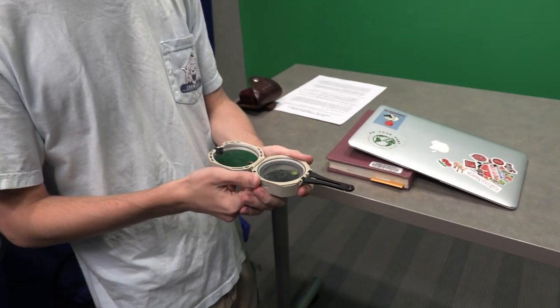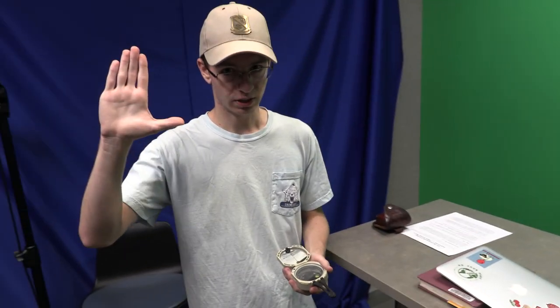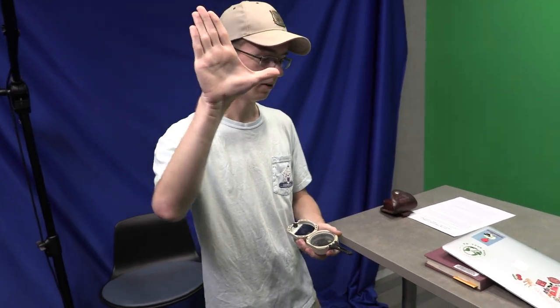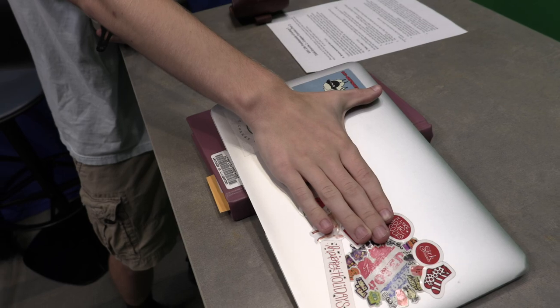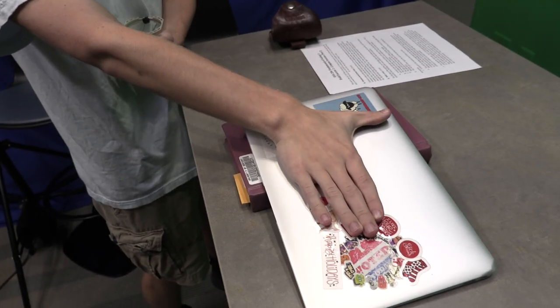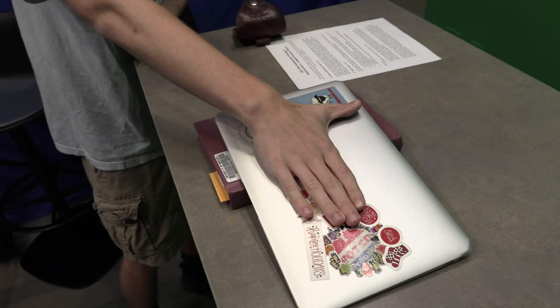So I'm going to demonstrate the right hand rule now. You just take your right hand, hold it like this, make the L, place it on the surface that you want to find the strike and dip of and the direction your thumb is facing is the direction this surface is striking.